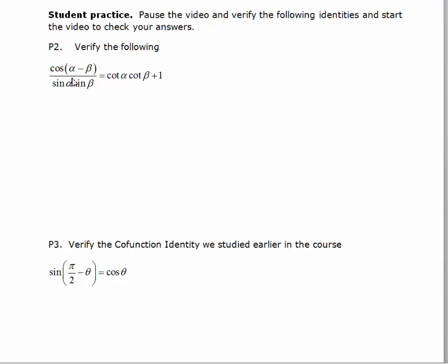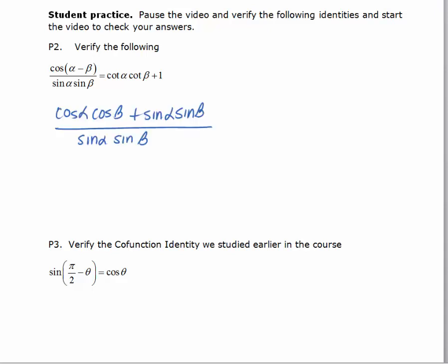In this first practice problem, we again have the cosine of alpha minus beta, so we'll use the difference formula for cosine. Rewriting the left-hand side gives us cosine alpha cosine beta plus sine alpha sine beta, all over sine alpha sine beta.